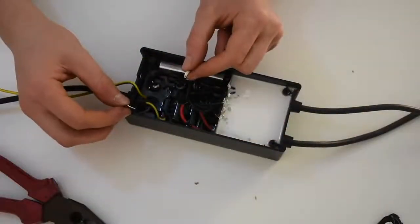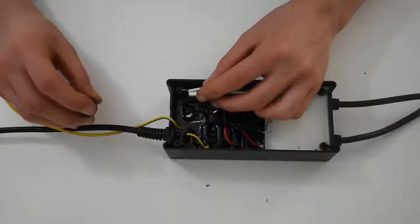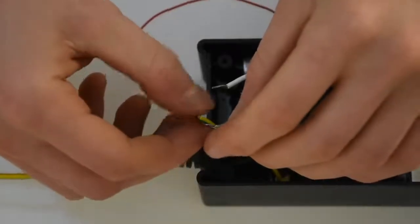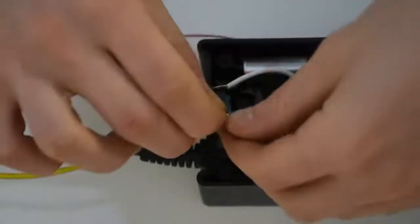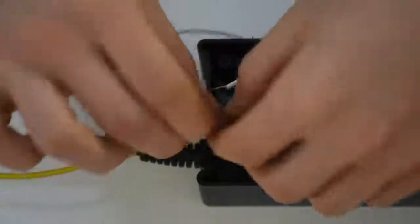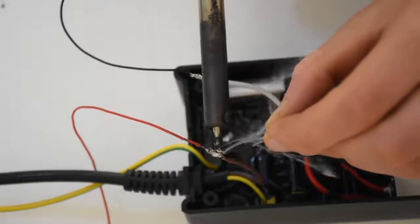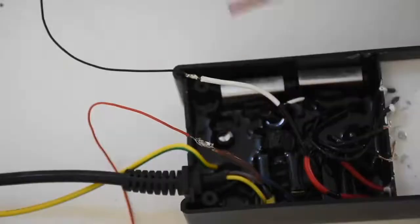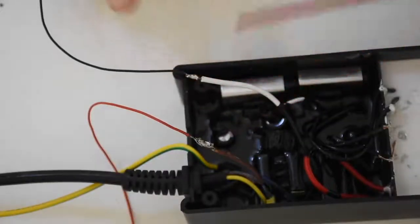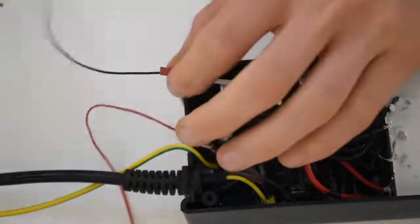Now we need to solder these wires to the new momentary button. But first we need to extend each wire so the button can fit outside the box. I'm also using some heat shrink tubing to make sure the transformer doesn't accidentally turn on.